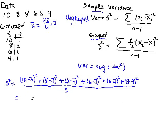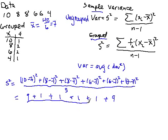It's not too hard — 3 squared is 9, plus 1, plus 1, plus 1, plus 1, plus 9, divided by 5. That comes out to be 22 over 5, which is 4.4.